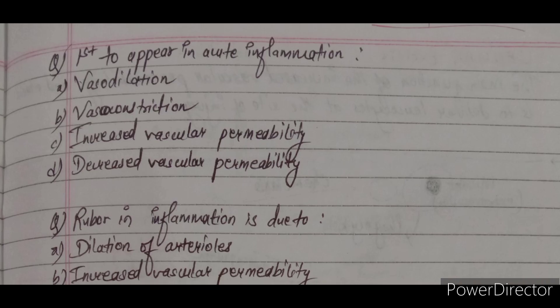Question 5: First to appear in acute inflammation is — A) vasodilation, B) vasoconstriction, C) increased vascular permeability, D) decreased vascular permeability. The correct answer is B — vasoconstriction. As we have already studied, the first step of vascular events was transient vasoconstriction, then after vasodilation, then increased vascular permeability.